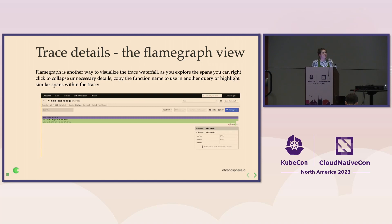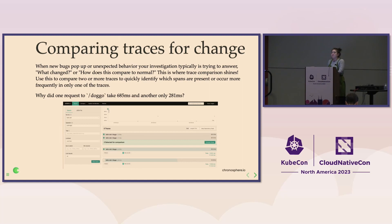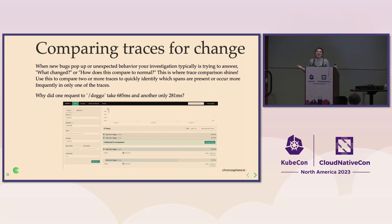We'll take a quick look at comparing traces for change. Comparing traces is what I used the most when I was troubleshooting as an SRE. Why do you want to compare traces? Most of the time when I would get paged or someone would tell me something was wrong, I'd say, 'well, what changed? It was working before.' I like to look at a request from when things were normal compared to afterwards when I got alerted. Being able to compare that request path is super powerful. In our case, for our Doggo app — why did one request for Doggo take 685 milliseconds and the other only 281?